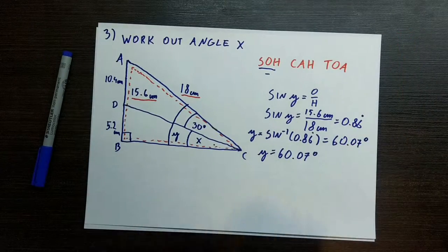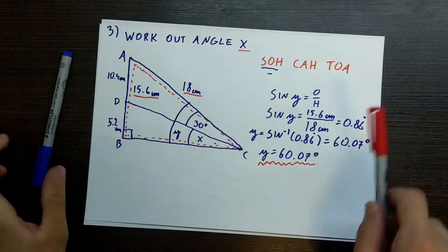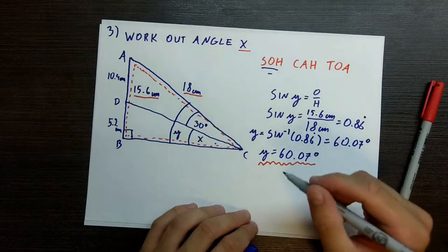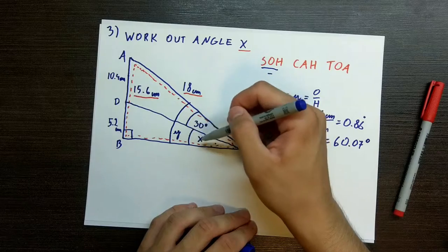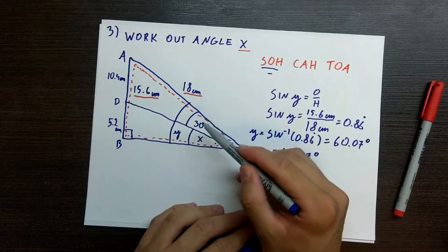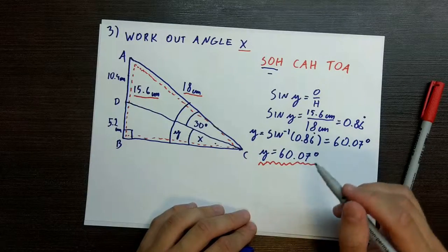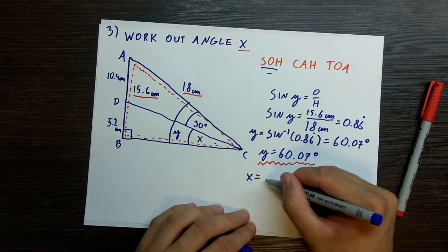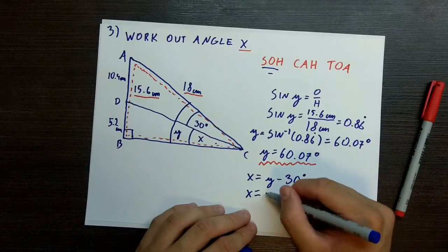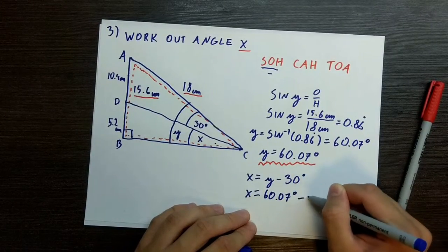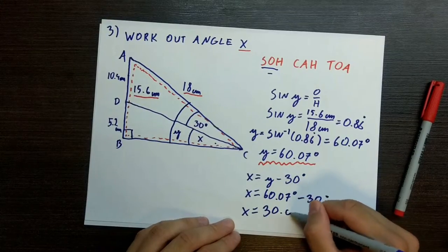So now we have angle y — y is equal to 60.07 degrees. I am going to underline it with a wavy line, because this is not our final answer since we are looking for x. But this is important. Now let's figure out x. We have y, which is 60.07 degrees, and that comprises two angles: x and 30 degrees. So if we take away 30 degrees from 60.07 degrees, we should be able to find x. So x is equal to y minus 30 degrees, which is 60.07 minus 30 degrees. Therefore angle x is equal to 30.07 degrees.